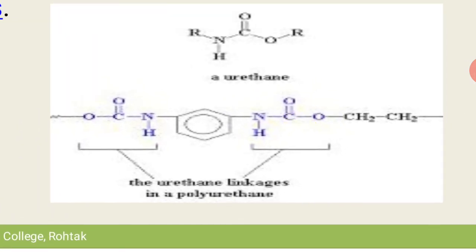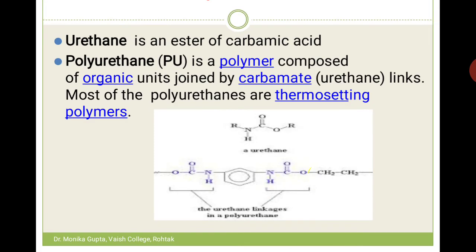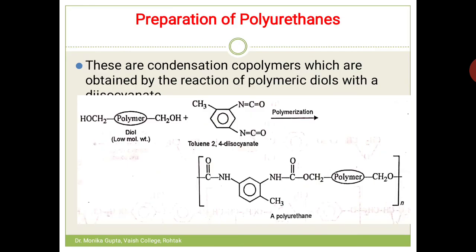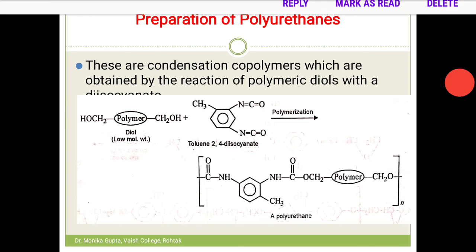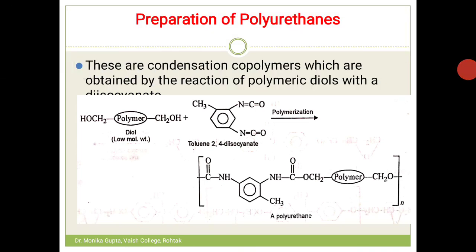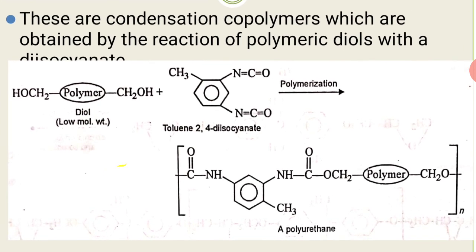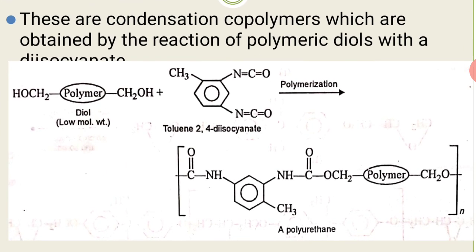A polymer containing these O-CO-NH linkages (urethane linkages) is known as polyurethane. To prepare it, you perform condensation polymerization using polymeric diols as a pre-polymer. You can decide approximately how many carbon atoms you want in the pre-polymer.